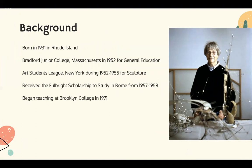Beginning with Lee Bontecou's background, she was born in 1931 in Rhode Island. She began her upper level education at Bradford Junior College, Massachusetts in 1952 for general education. She later went to the Art Students League in New York during 1952 to 1955 to study sculpture. In her education, she also received a Fulbright scholarship to study in Rome from 1957 to 1958.